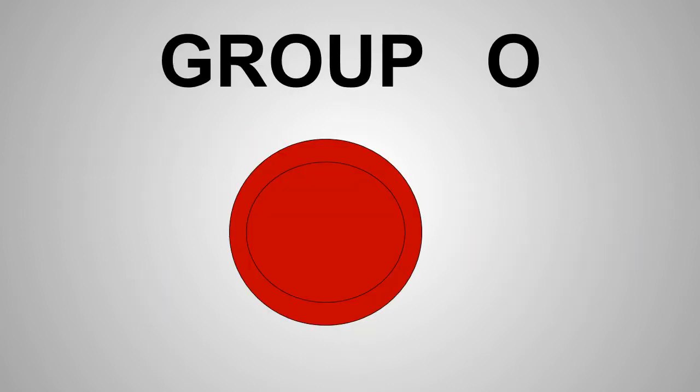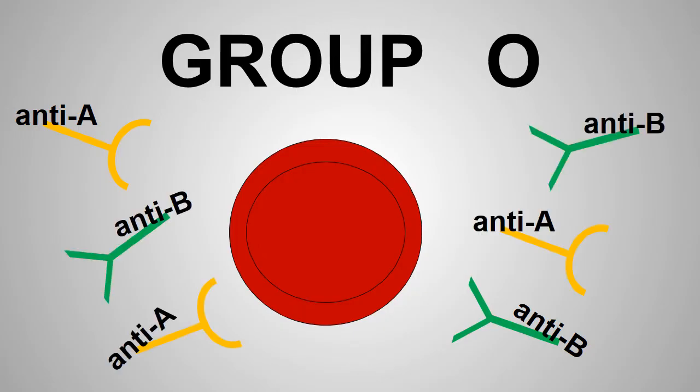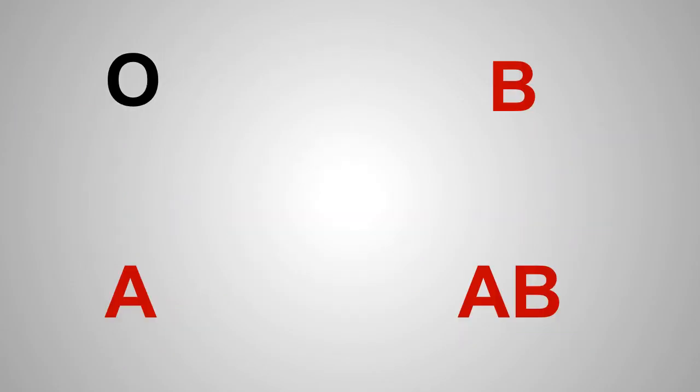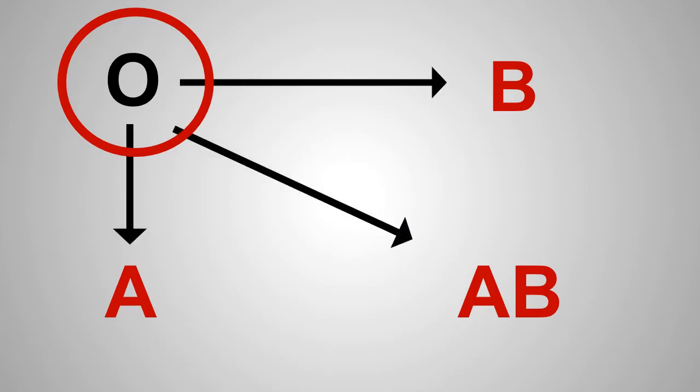Group O has neither A nor B antigens and has antibodies against both A and B antigens. It means they can receive blood only from people in group O, but they can give blood to all other people in the ABO system.